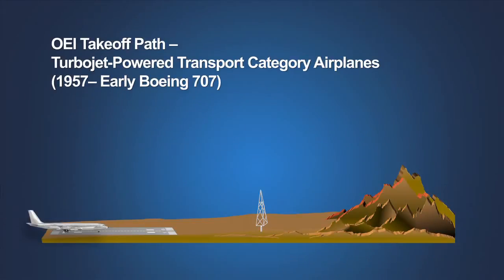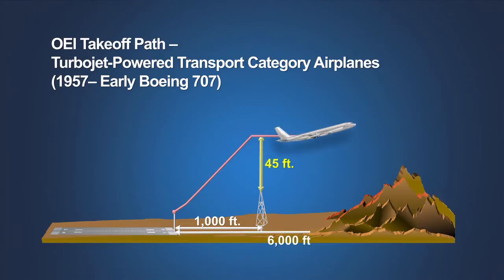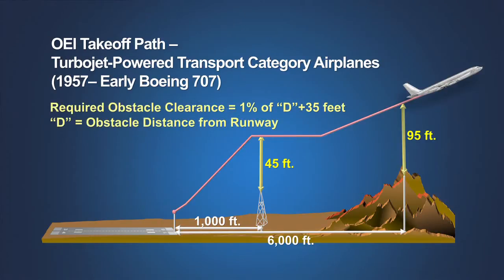To provide adequate obstacle clearance for the new turbojet airplanes, the air carrier operating rules introduced in 1957 provided an increasing margin of obstacle clearance as the airplane traveled further from the end of the runway. These new rules required that the takeoff path clear any obstacle by 1% of the obstacle's distance from the end of the runway plus 35 feet until the airplane was 1,000 feet above the runway. These rules proved cumbersome for operators and were applied only to early Boeing 707s.